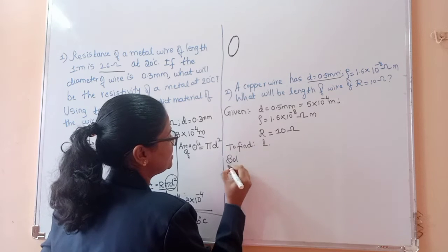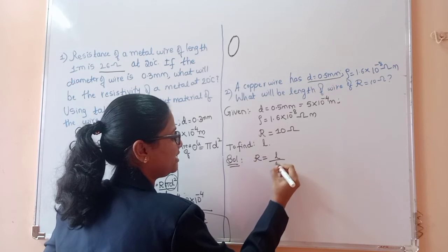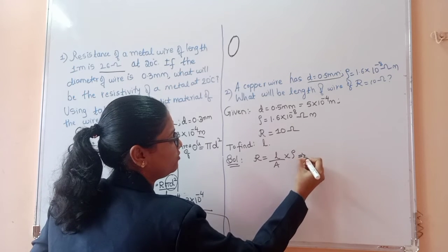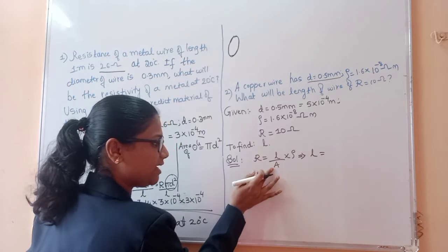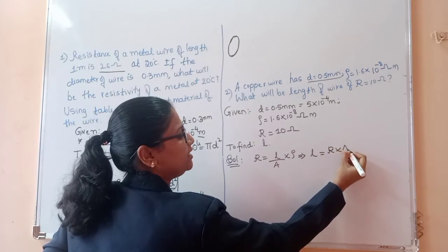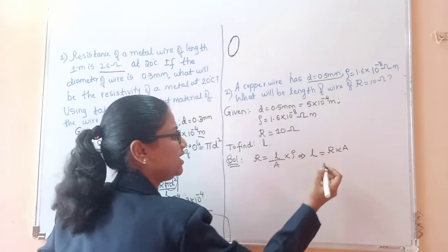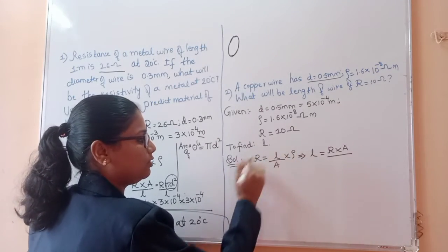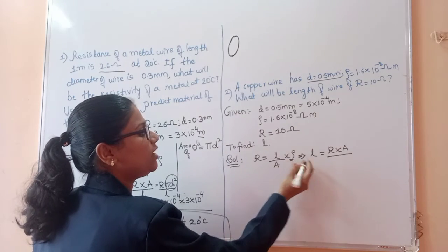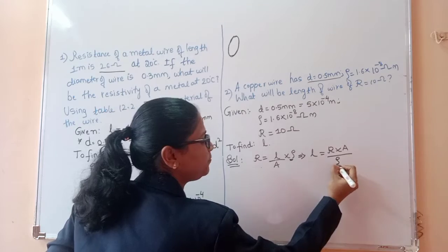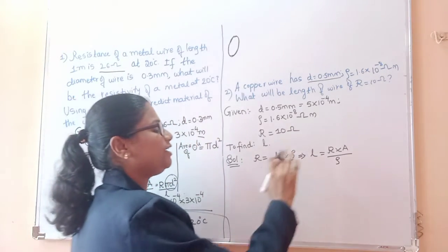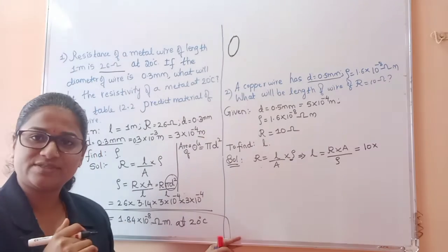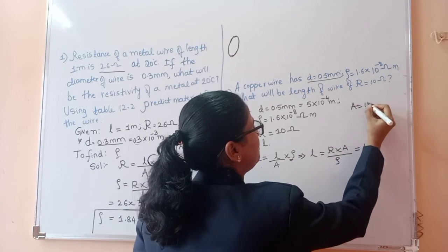Starting with the resistance formula R = ρL / A, we solve for L: L = R × A / ρ. Area is not given directly, so we use A = π D². Substituting: L = R × π D² / ρ.